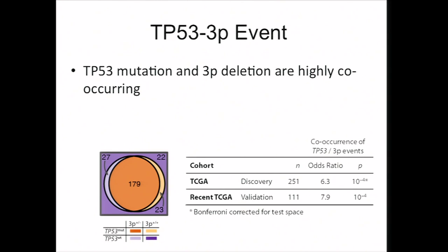One of the really nice things about TCGA is that while we were conducting this study, another set of patients were sequenced. We were able to find our associations in the discovery cohort and then validate them in 111 — now up to 170 — new recent TCGA patients. Indeed, we see an even higher effect size within this validation cohort for this co-occurrence.